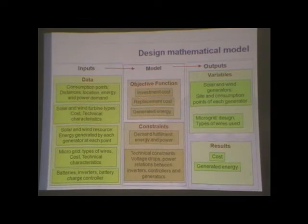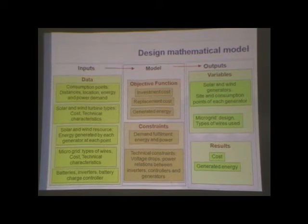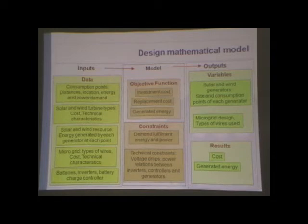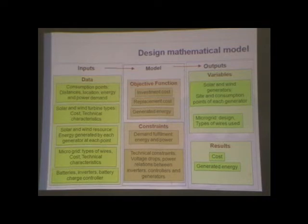The idea of the model is that first we need to define an objective function. This function measures the solutions and tells us which one is better than the other. The possible objective functions are, for instance, the initial investment cost or the replacement cost for the energy that we supply. In the case of Peru, we use a specific objective function. We also need to give the model some constraints — an obvious one is that we need to satisfy the demand of the households, and we also need to consider technical constraints such as voltage drops or power relations between inverters, controllers, and generators.